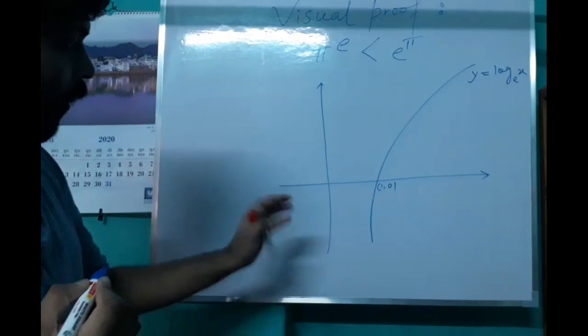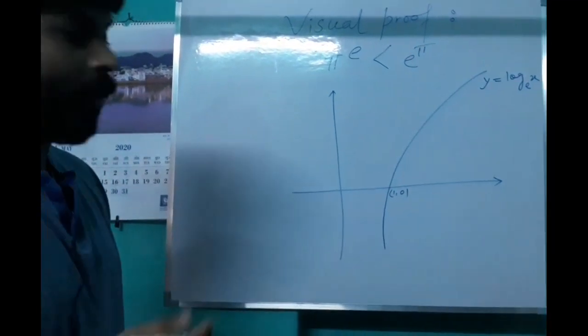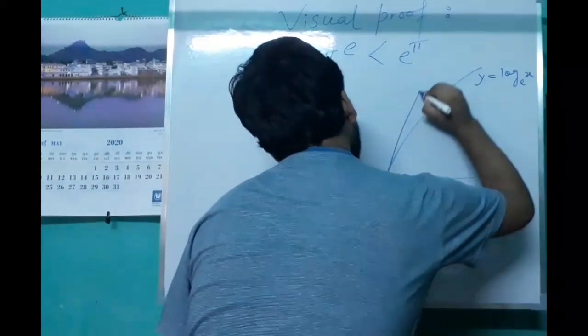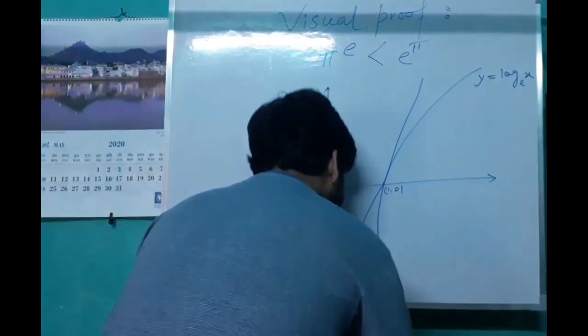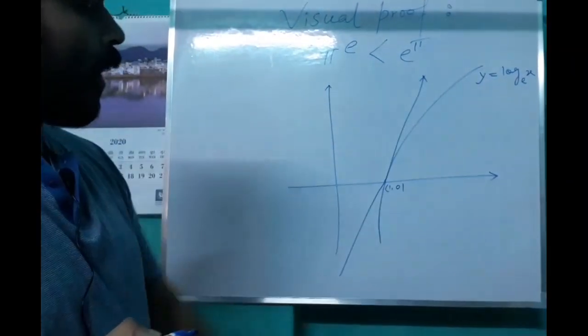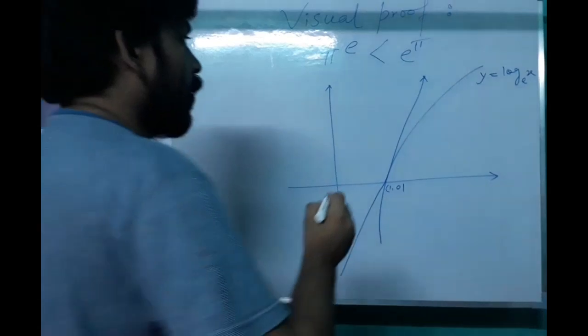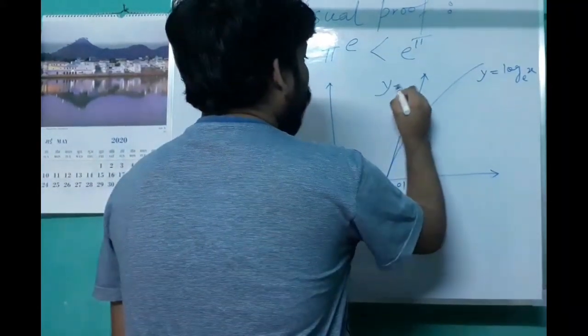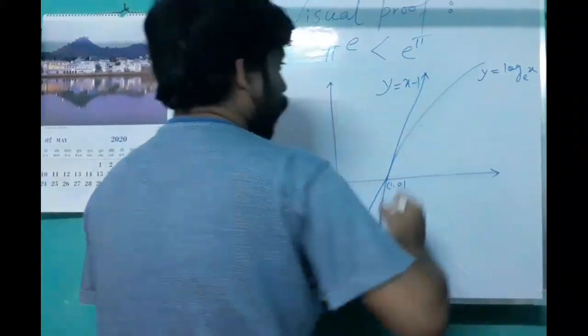Now we draw a tangent at the point x equal to 1. This is the tangent line at the point x equal to 1 to the curve y equal to log x. The equation of this line is y equal to x minus 1.